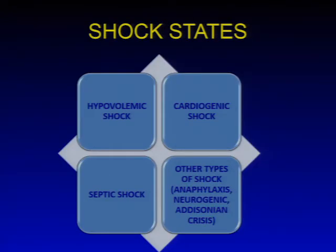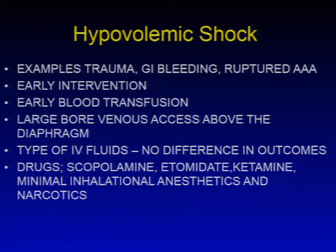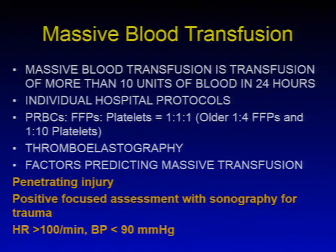Shock states are classified as hypovolemic, cardiogenic, septic, and other forms. Hypovolemic shock examples include trauma, GI bleeding, and ruptured AAA. Early intervention is essential, with early blood transfusion and large-bore venous access above the diaphragm. The type of IV fluid (crystalloid vs. colloid) makes no difference in outcomes. Drugs that cause hemodynamic compromise should be avoided; a minimal inhalation anesthetic and narcotic technique is used. Massive blood transfusion protocol (more than 10 units of blood in 24 hours) should be available, with transfusion guided by thromboelastography.